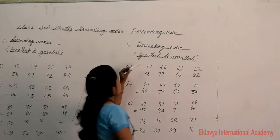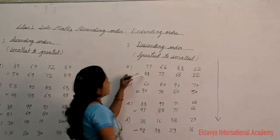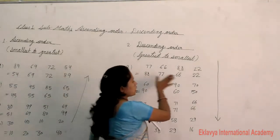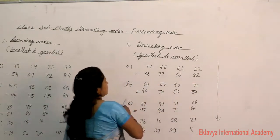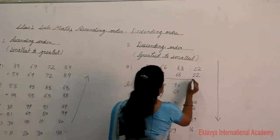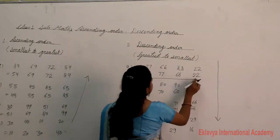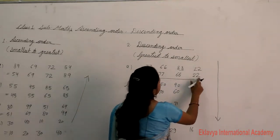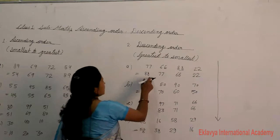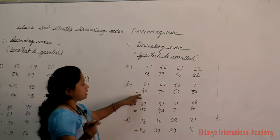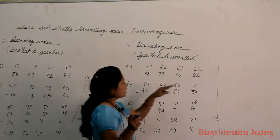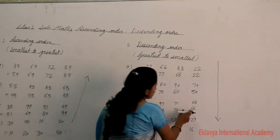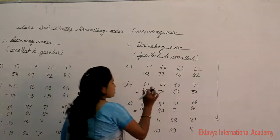So in descending order we always choose the greatest number first and go to the smallest. For example, 98 is the greatest and 66 is the smallest number, going through 58 and 16.